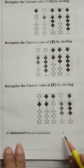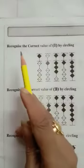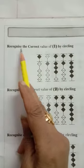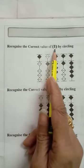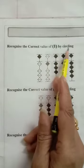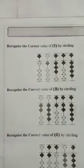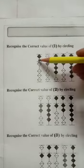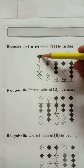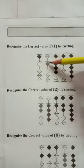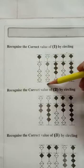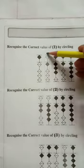Hello students, today I am doing page number seven. We have to recognize the correct value of one by circling. We have to find out where one is in this row. Upper unit five — this is wrong. This one is the correct value of one, so we have to circle it.